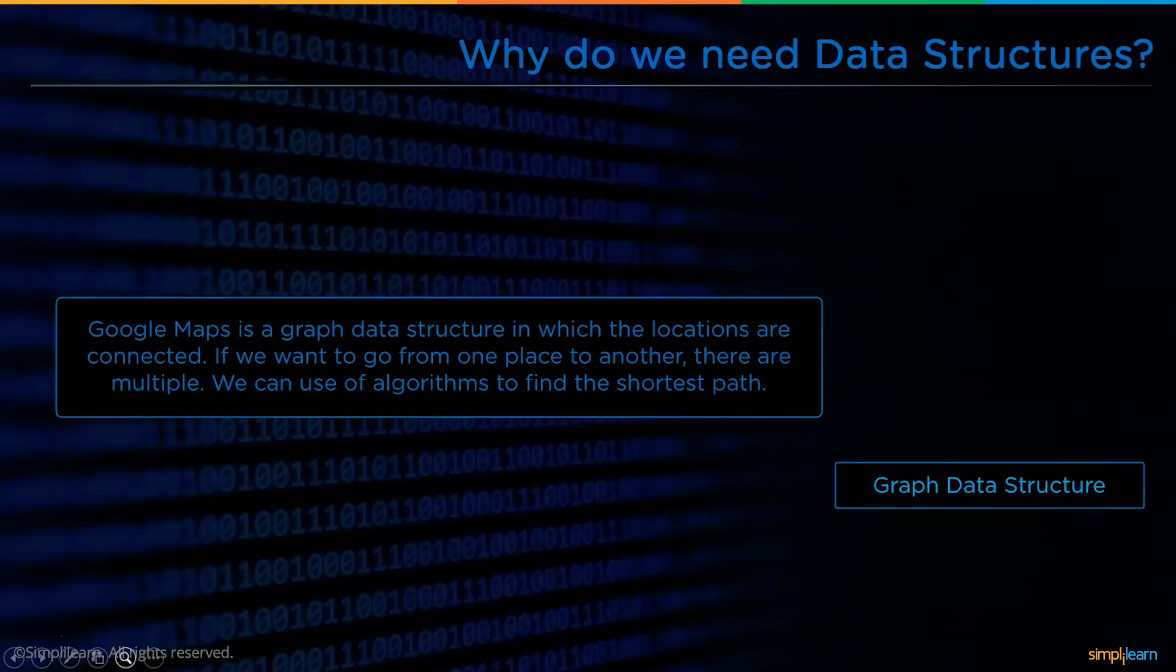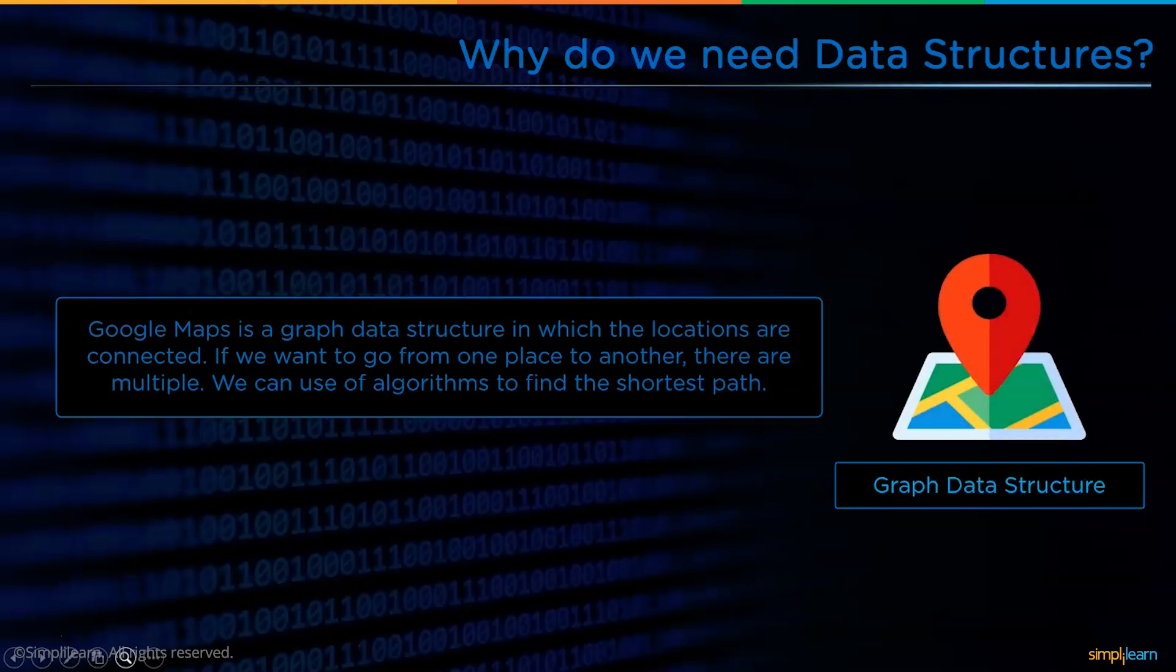Google Maps is the graph data structure in which all the cities and states are connected. If we want to go from one place to another, there may be many ways to do so, so we can use some algorithms to find the shortest path. As a result, Google Maps is a perfect example for the graph data structure working analogy.